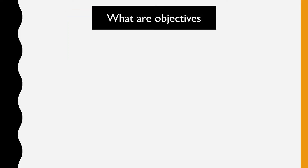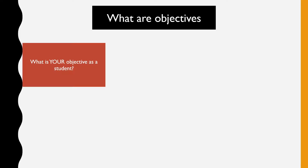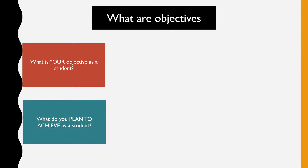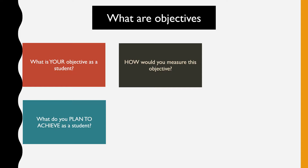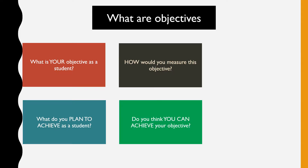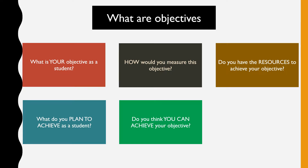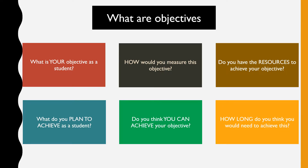To understand what objectives are, let's look at the context of a student — let's say, for example, you. What objectives mean to you: what is your objective as a student? What do you plan to achieve? How would you measure this objective? Do you have the resources to achieve it, and how long do you think you will need?